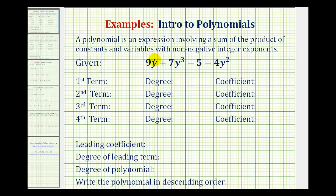The first term would be 9y. The degree of the term is the exponent on the variable factor. So 9y is the same as 9y to the first. So this is a degree one term. And the coefficient is the constant factor or the number in front of the variable factor. So the coefficient is nine.